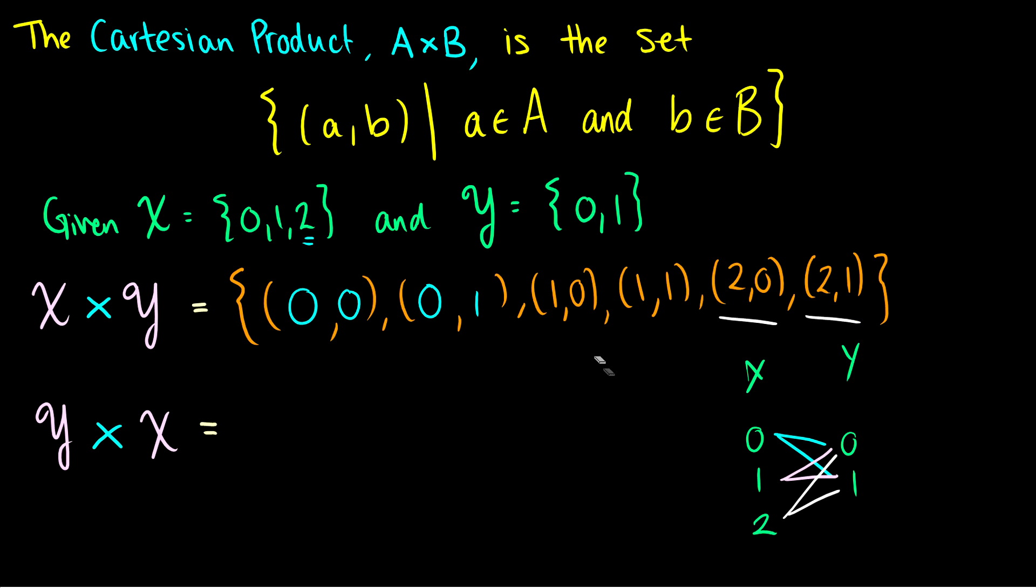So what does it look like if instead of taking X cross Y, I take Y cross X? Well, visually in this kind of graph here, it's the same thing except reversed. So now I'm doing 0 with 0, 1, and 2, and then I'm doing 1 with 0, 1, and 2. So essentially, I'm going to get X cross Y, but each pair will be flipped.